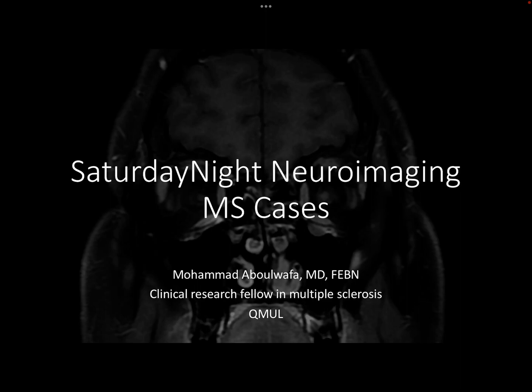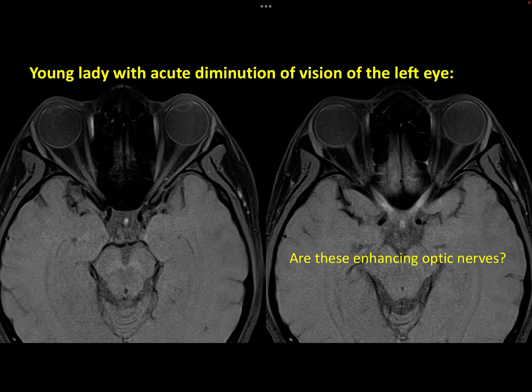This is a teaching clinical neuroimaging case in MS. If you are faced with this young lady with an acute diminution of vision in the left eye, ask her for an MRI over the orbit, and it comes this way.